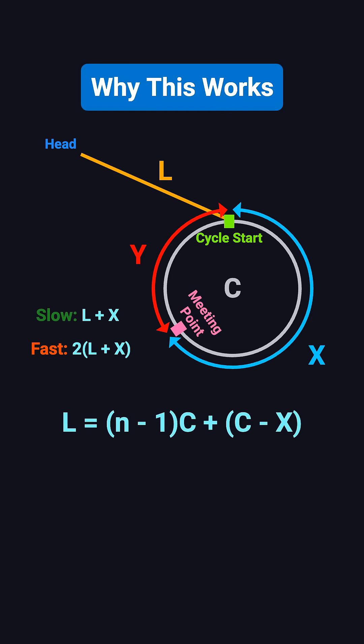We can also write this as L equals (n - 1)C + C minus X. And since C minus X is Y, we finally get L equals (n - 1)C + Y.